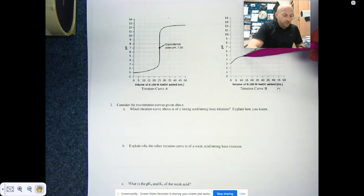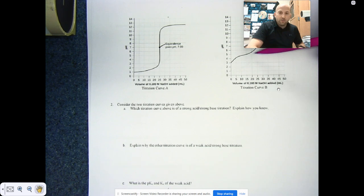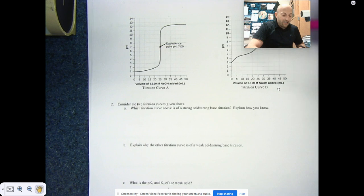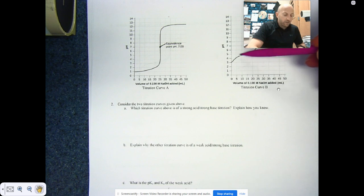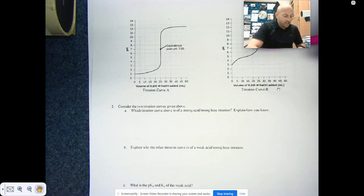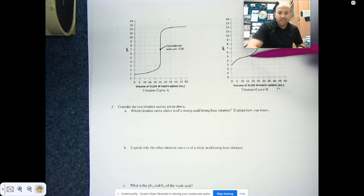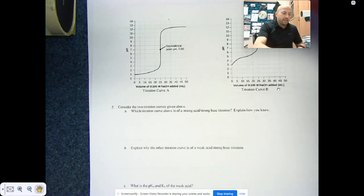At the pKa of the weak acid, there's a couple of things. Once you are halfway to the equivalence point, we have that the pKa is equal to the pH. So you can get your pKa actually from the graph. And then if we wanted to get our Ka, which is our equilibrium constant of that particular acid, we know that the Ka is 10 to the negative pKa or 10 to the negative pH. So we can figure those out.